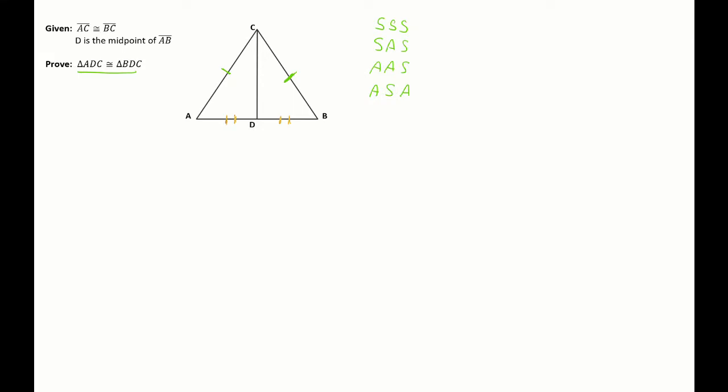And the last thing I have here, well I'm not told anything about angles, but I do notice that this side DC is shared between the two triangles. So that means it has to be congruent to itself. And that's kind of what the reflexive property tells us - something is congruent to itself. So right here I have one side, two sides, three sides of my triangle shown congruent or equal to each other.